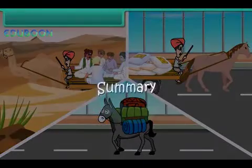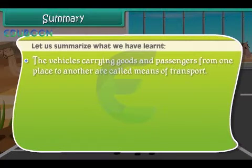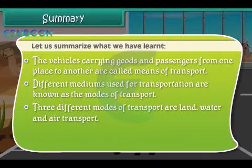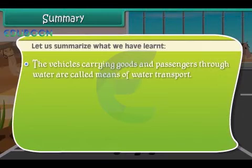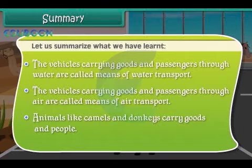Let us summarize what we have learned. The vehicles carrying goods and passengers from one place to another are called means of transport. Different mediums used for transportation are known as the modes of transport. The three different modes of transport are land, water and air transport. Animals like camels and donkeys also carry goods and people.